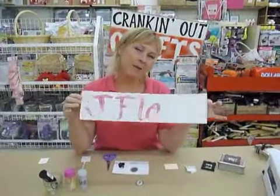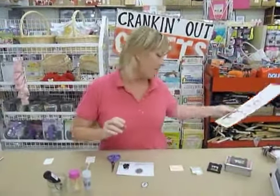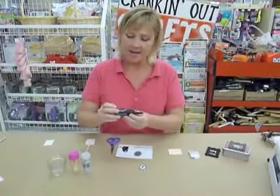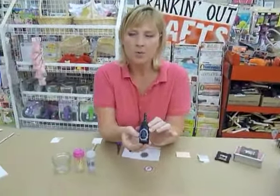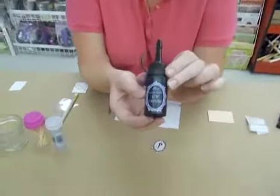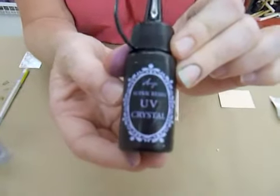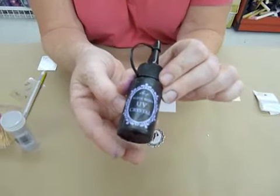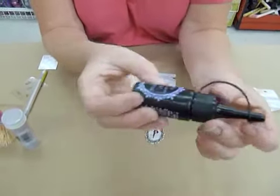Welcome back to Crankin' Out Crafts, my name is Jay Flo and we have an exciting new product for you today called Super Resin UV Crystal. This is special exclusively at our Ben Franklin stores in Hawaii and it's from Japan.